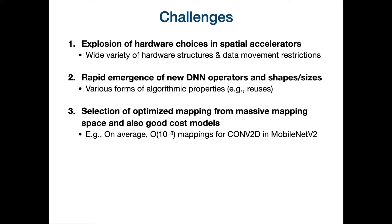There are challenges while trying to find effective mappings of DNN operators onto spatial accelerators. The first challenge is that there is an explosion of hardware choices in spatial accelerators to model. For example, some accelerators have only support for adjacent links, while some have support for reduction trees and so on. On top of that, certain accelerators have data movement constraints — for example, in systolic-style accelerators, data movement should happen either towards the horizontal or vertical in the array.